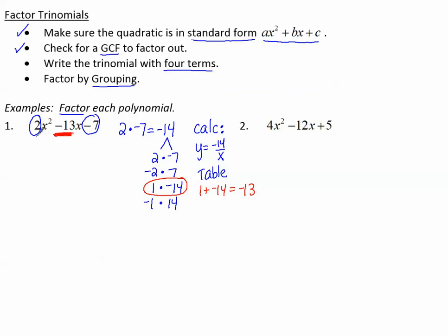So I rewrite my trinomial, putting 2x squared in the front. But now for the negative 13x, I'm going to use the numbers 1 and negative 14. It's helpful to put the negative number first, so I write negative 14x and then positive 1x. And then my last term, the constant term, negative 7. Now I have four terms.